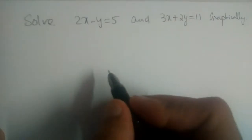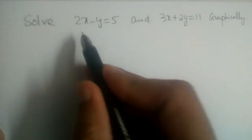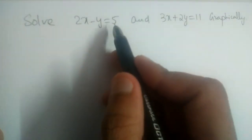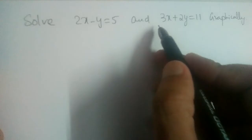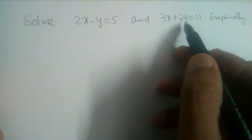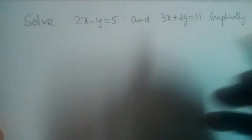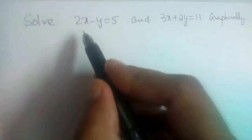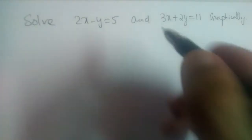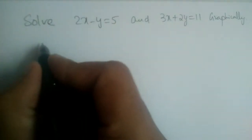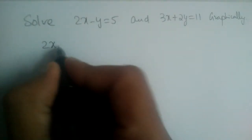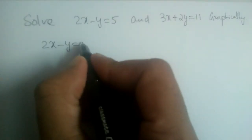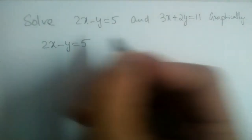We have two equations to solve graphically: 2x minus y is equal to 5, and 3x plus 2y is equal to 11. Using a graph, we should solve this. The first equation is 2x minus y is equal to 5.